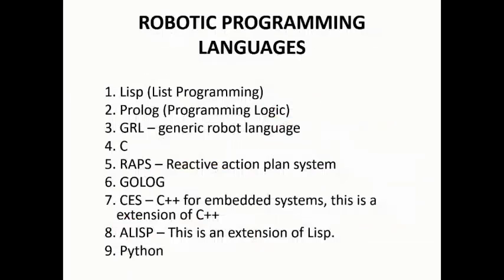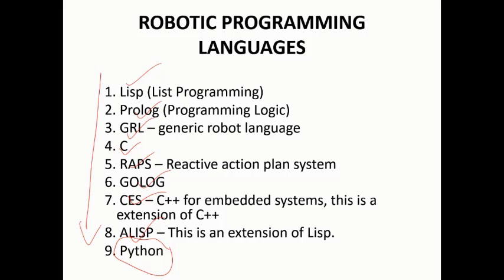The programming languages used for robotics have evolved over time. Earlier, in the 1960s and 70s, we used LISP. Later we used Prolog, GRL, C, RAPS, Golog, CES, and C++, along with LISP. Nowadays we are using Python to generate code for robots. These are some of the programming languages from history to the present day.